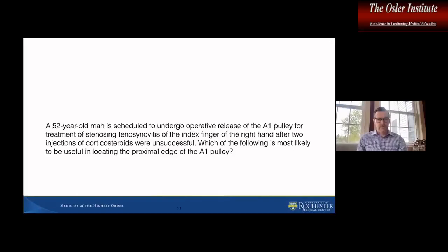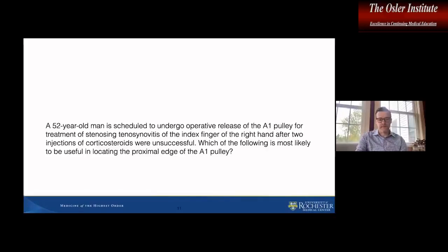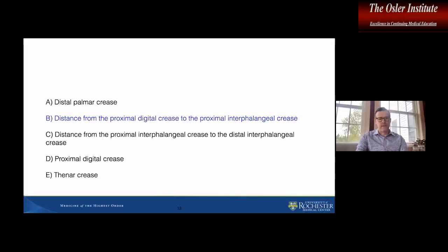Here's an example of where the vignette is important. A 52-year-old man is scheduled to undergo operative release of the A1 pulley of the right ring finger after two injections of corticosteroids. The question asks which of the following is most likely useful in locating the proximal edge of the A1 pulley. This is more of a complete memorization question — you might think 'trigger finger, I've got this one.' But the answer is actually the distance from the proximal digital crease to the proximal interphalangeal crease.